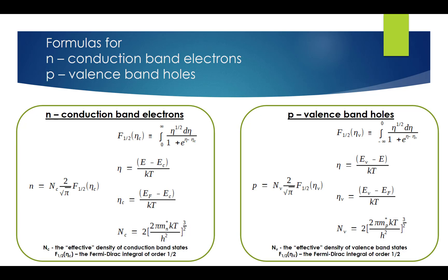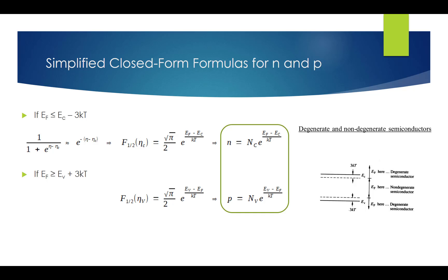The n and p formulas here are very general results, valid for any conceivable positioning of the Fermi level. The constants N_C and N_V are readily calculated. The value of the Fermi integral can be obtained from available tables, plots, or by direct computation. However, this form is still cumbersome and inconvenient to use in routine analysis.